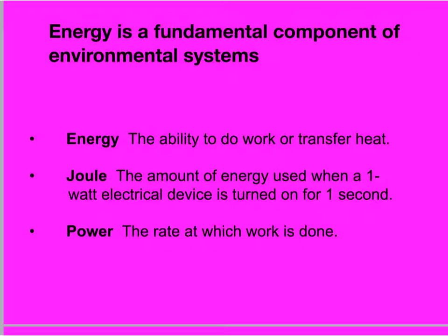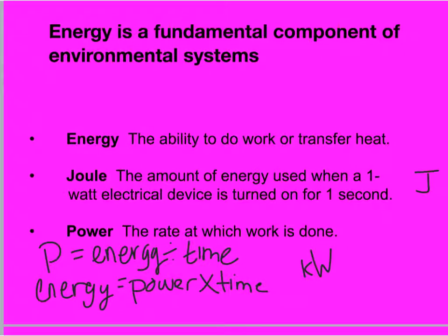The basic unit of energy in the metric system is a joule — capital J. A joule is the amount of energy used in one watt of a light bulb turned on for one second. It's a very small amount. Although we often use the word energy and power interchangeably, they are not the same thing. Energy is the ability to do work, and power is the rate at which work is done. The formula for power is: power equals energy divided by time. In order to get energy, that's power multiplied by time.